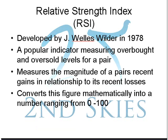The RSI was developed by J. Welles Wilder in 1978 and it quickly became a popular indicator measuring general overbought or oversold levels for a pair. This is significant because it tells us when a pair, stock, or commodity has hit an overbought or oversold level — meaning the order flow is heavily skewed to one side, and eventually those buyers or sellers are going to have to take profit and exit, or there will be no new capital to push the pair further, indicating a potential swing or reversal point.